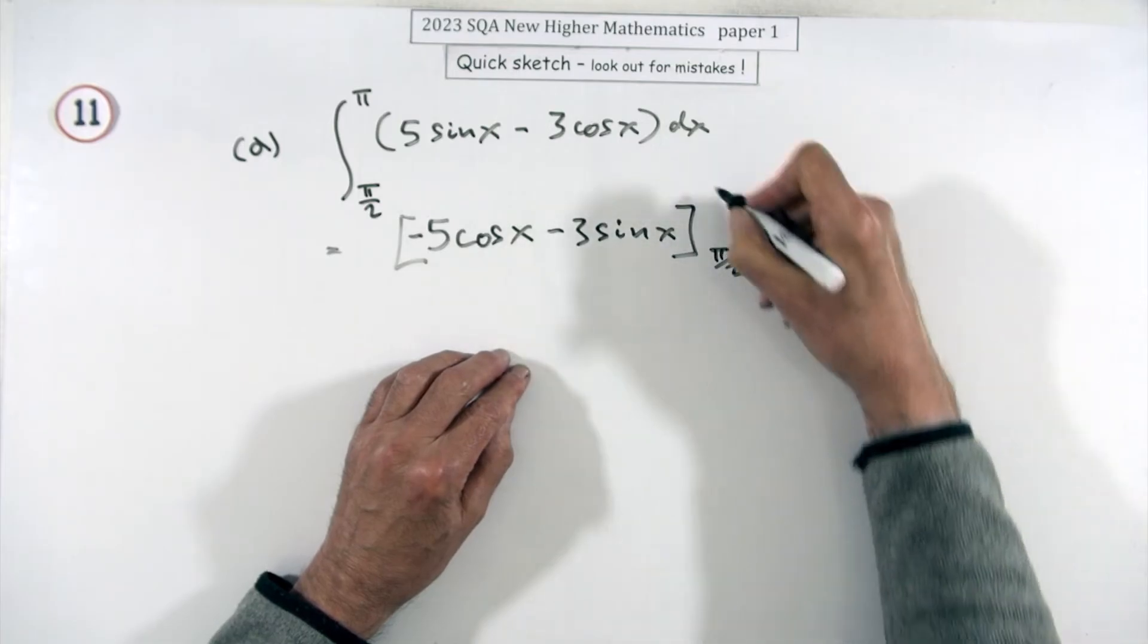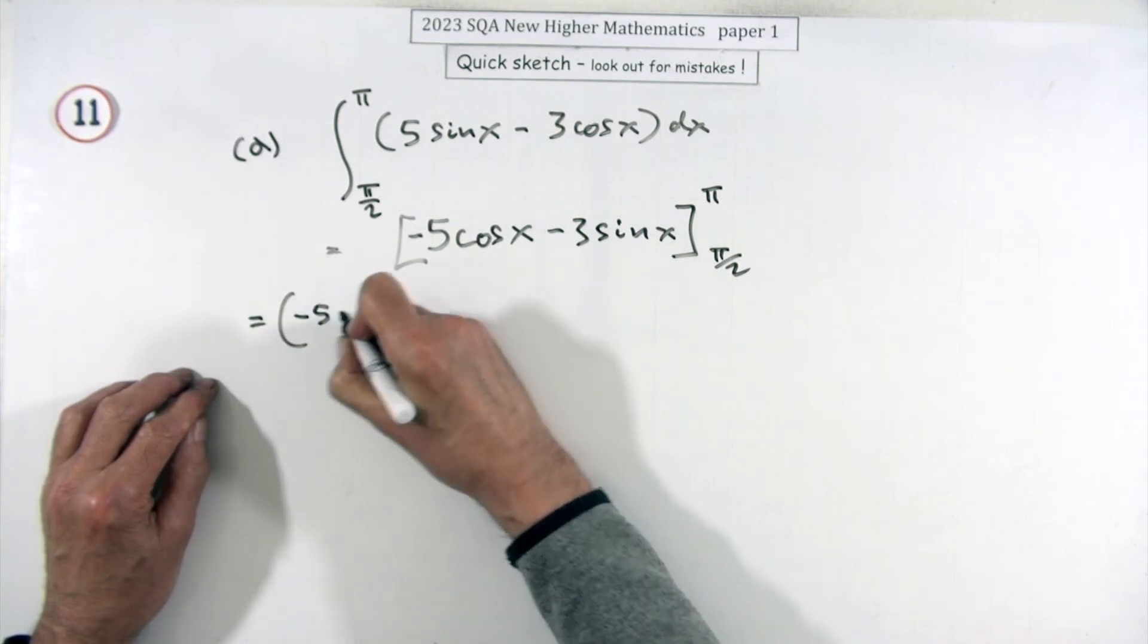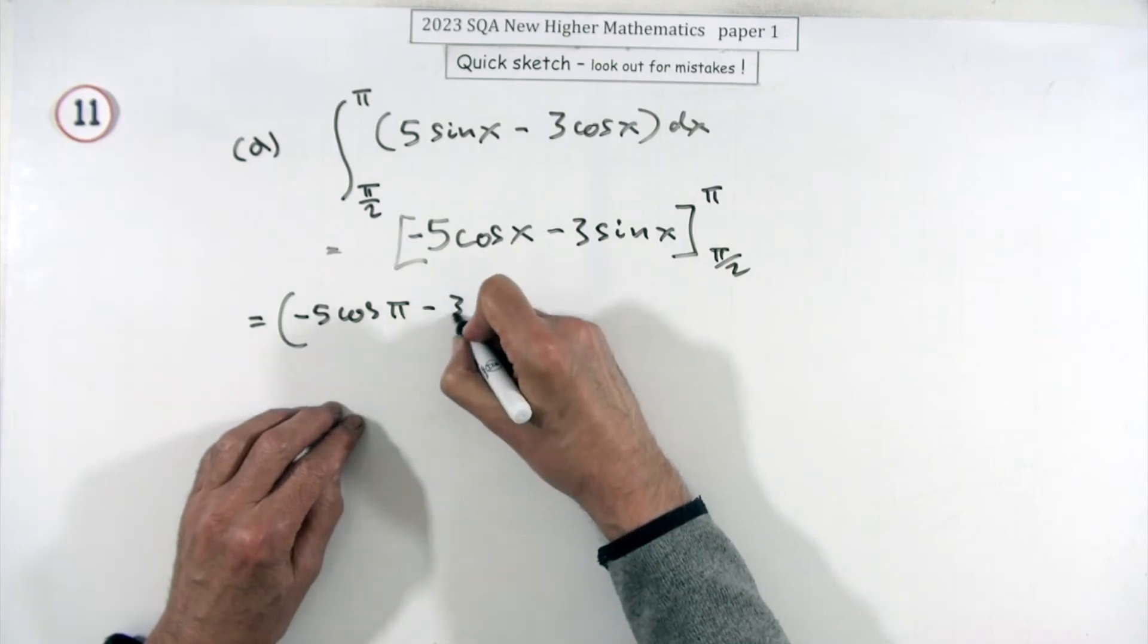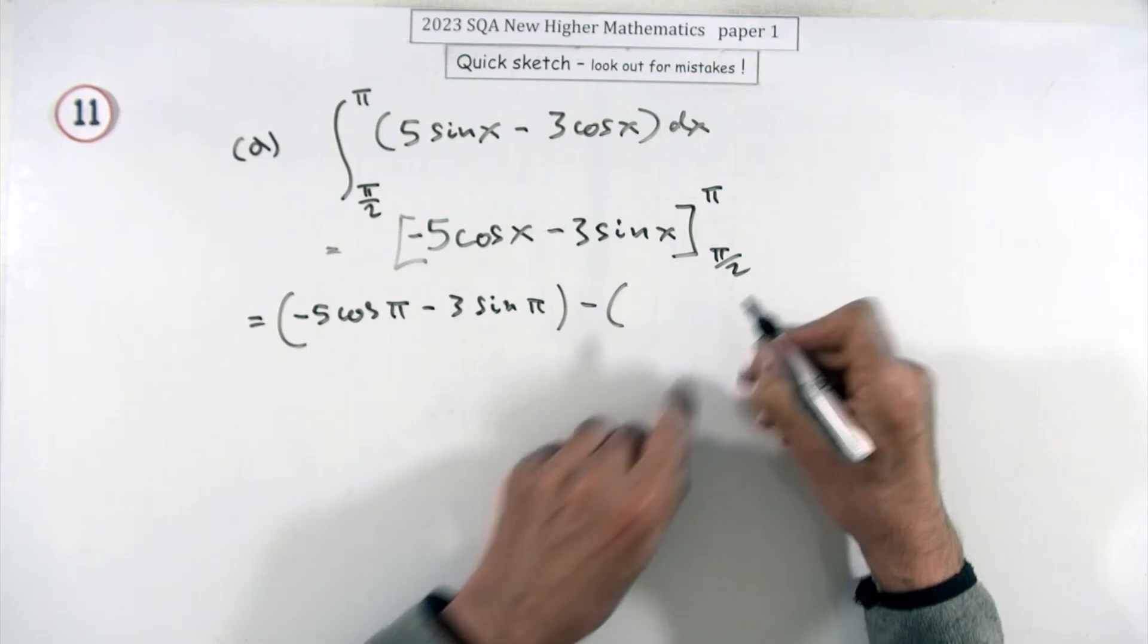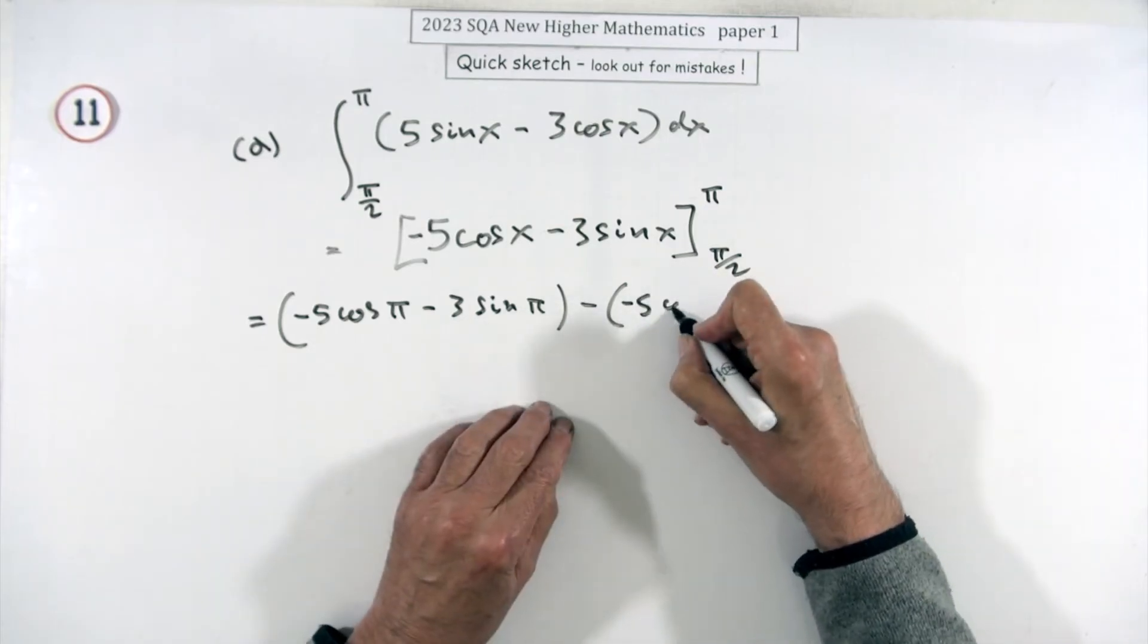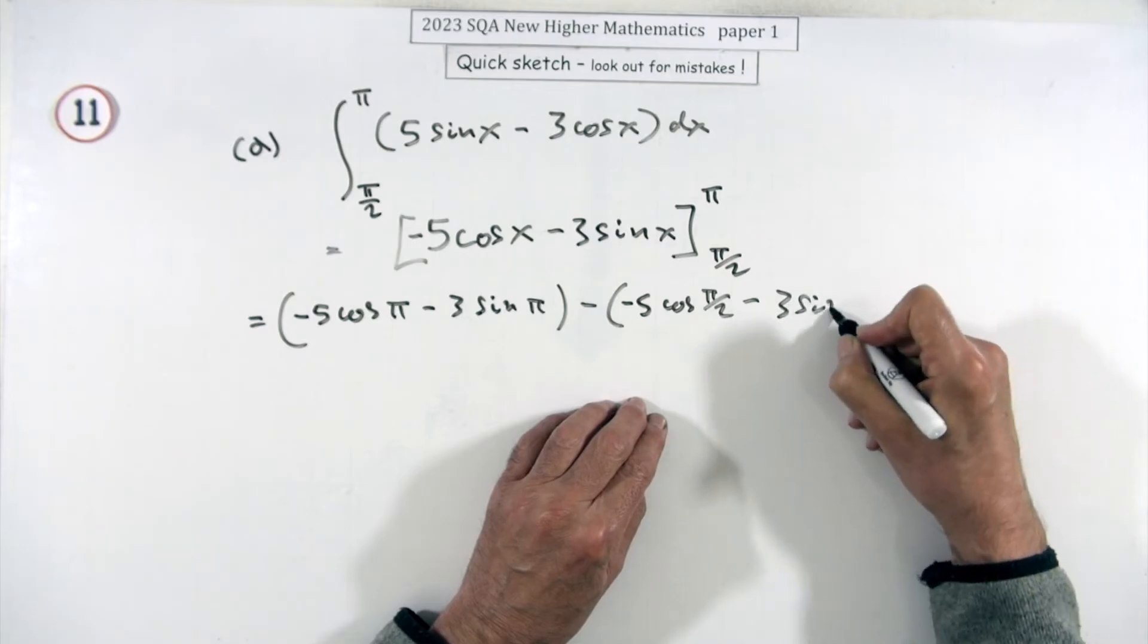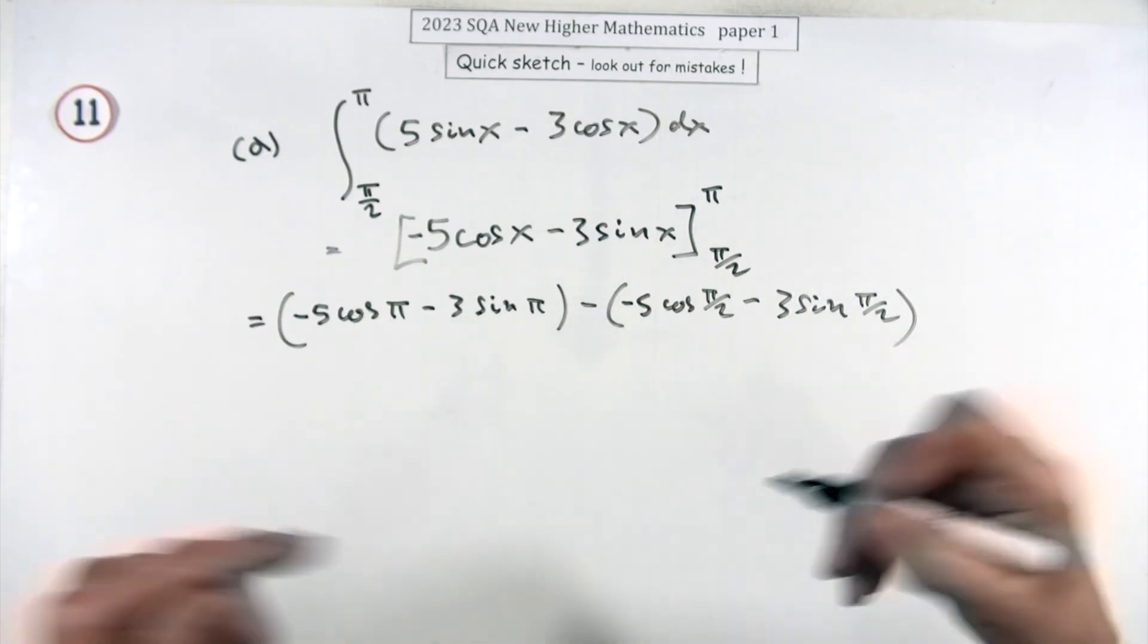That's evaluated from π/2 to π, so it's just a case of doing that. Negative five cos π minus three sine π, take away negative five cos(π/2) minus three sine(π/2).